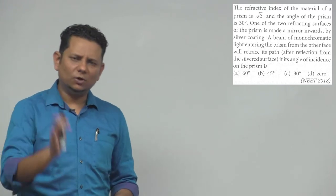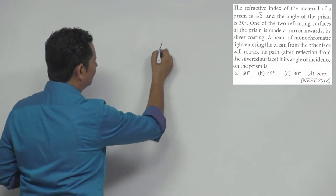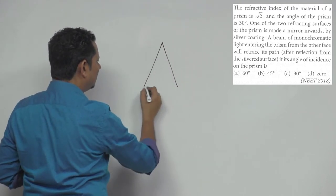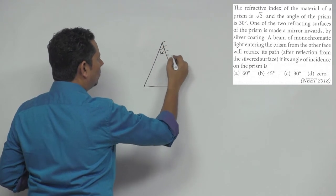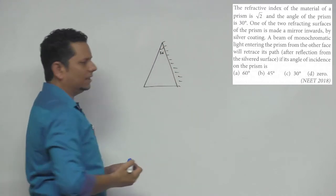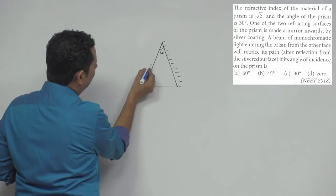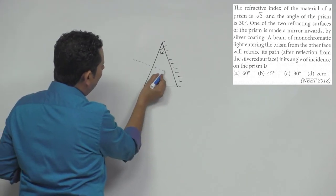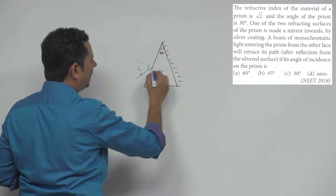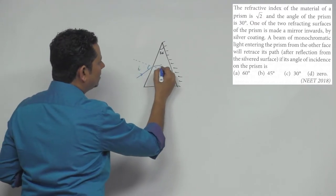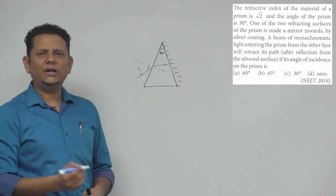Let's understand the situation. Here we have a prism where the angle is 30 degrees, and let's say this side has been silvered. Now the ray comes in — first let's draw the normal here. So this is your normal. The ray is incident at angle i, then it travels inside and strikes the silvered surface, and after striking it retraces its path.